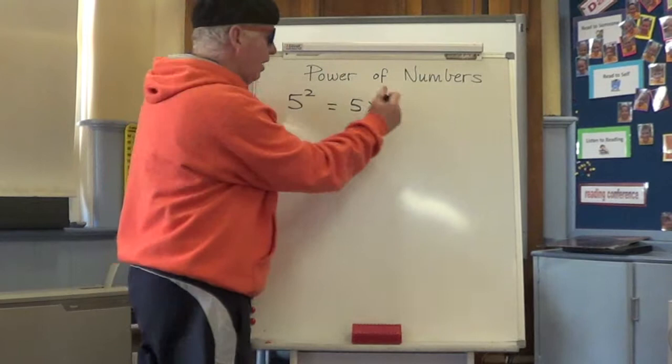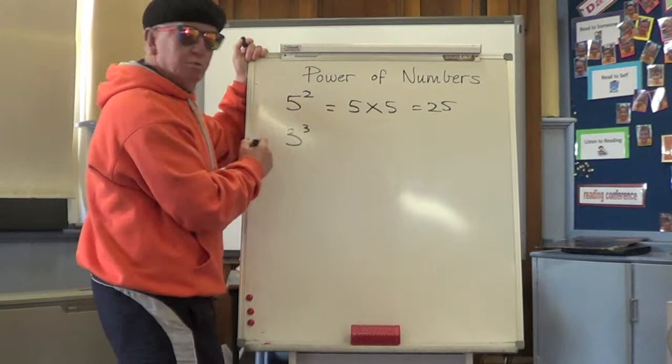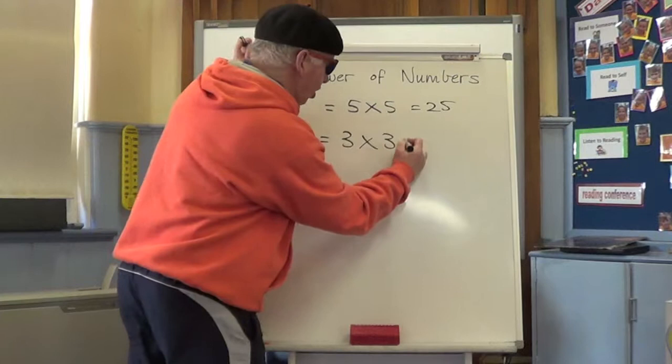Let's do one more. Let's go 3 cubed. That is 3 times 3 times 3. 3 times 3 is 9, and 3 times 9 is 27.